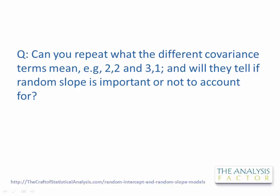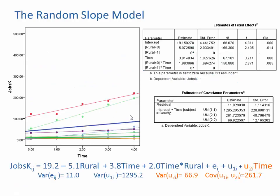Sure, to answer this we are once again going to look at some output. This is the output that Okter is referring to right over here — these numbers. When we fit random effects, 'UN' stands for unstructured, and the 1 comma 1 for example refers to the first row and first column of what is called the G matrix. The G matrix is the variance-covariance matrix of the random effects.